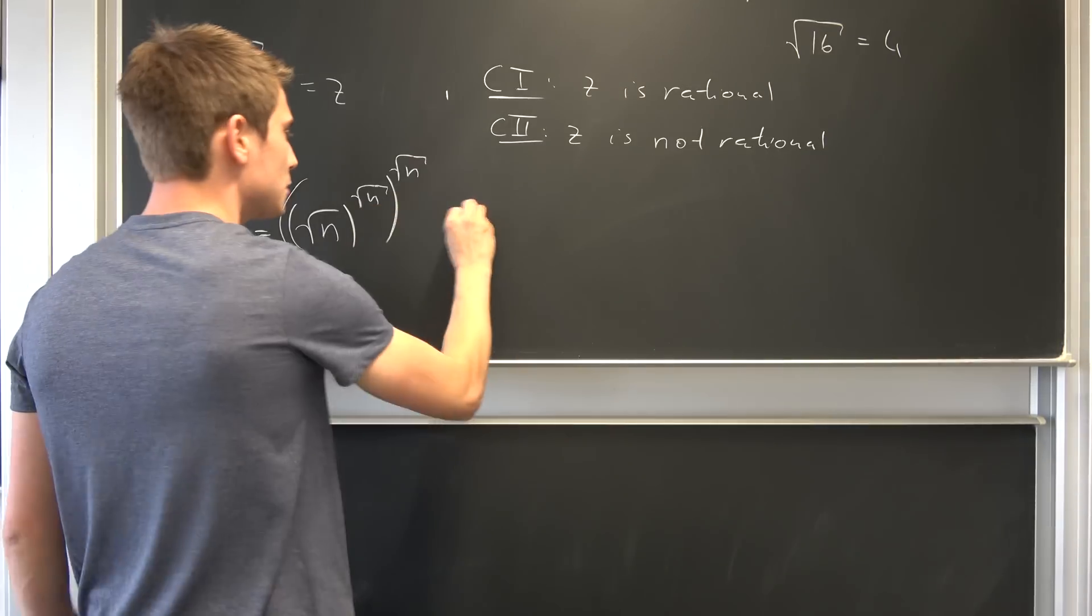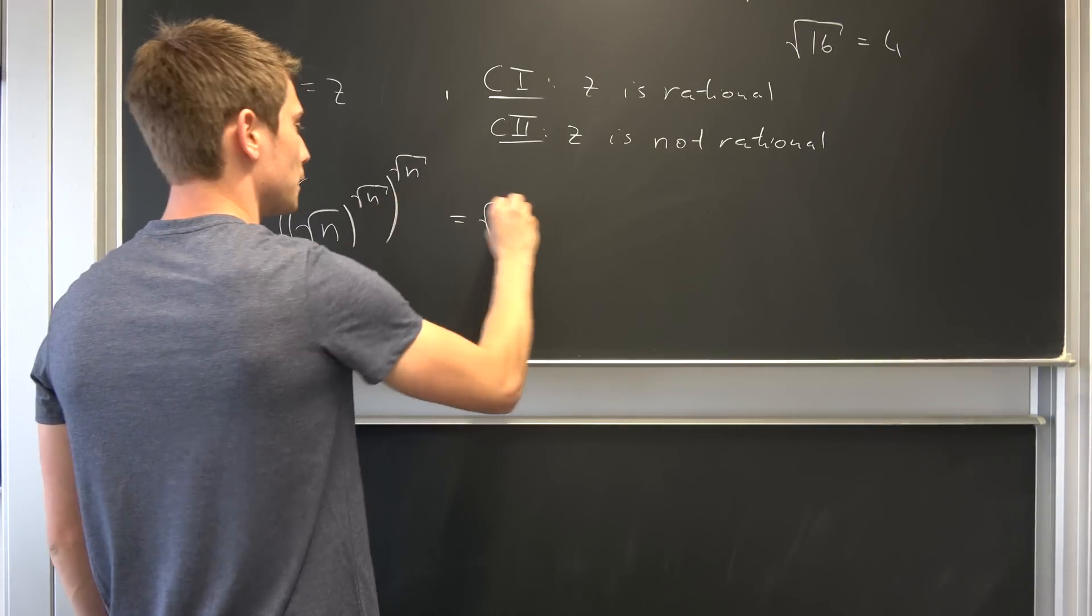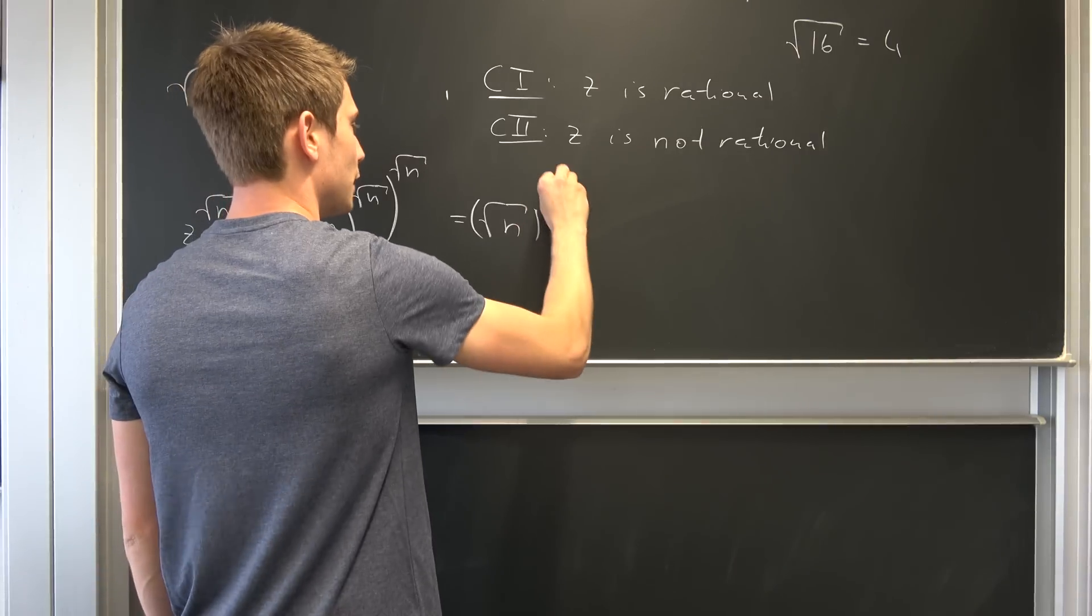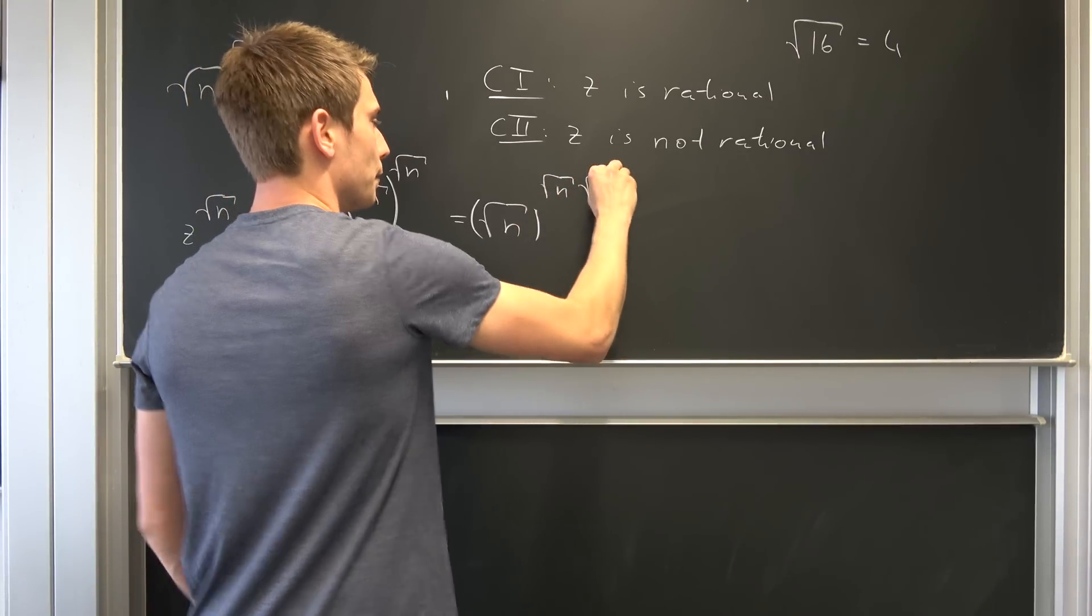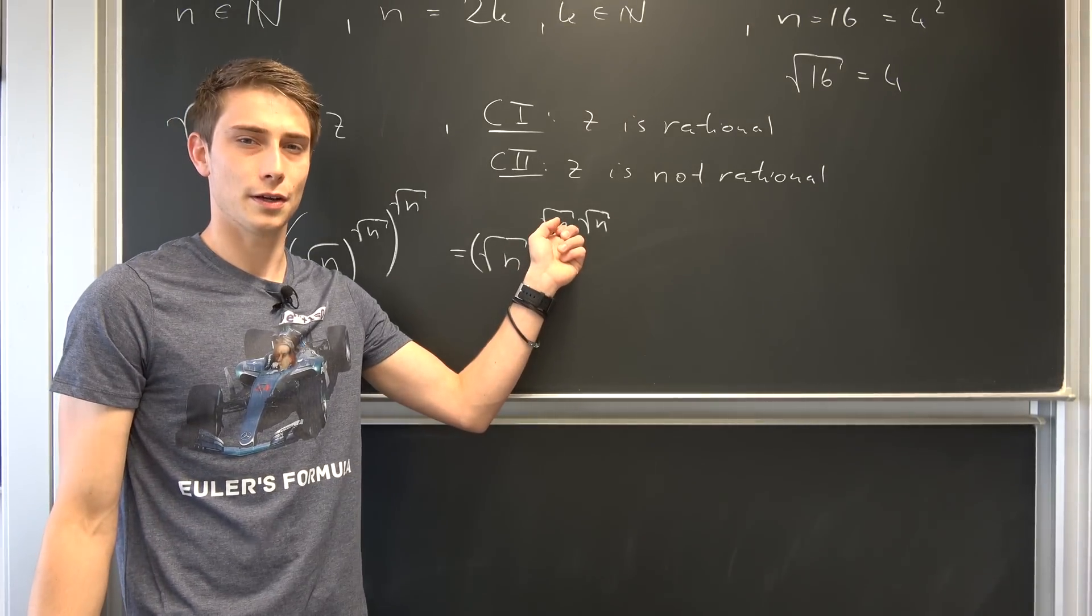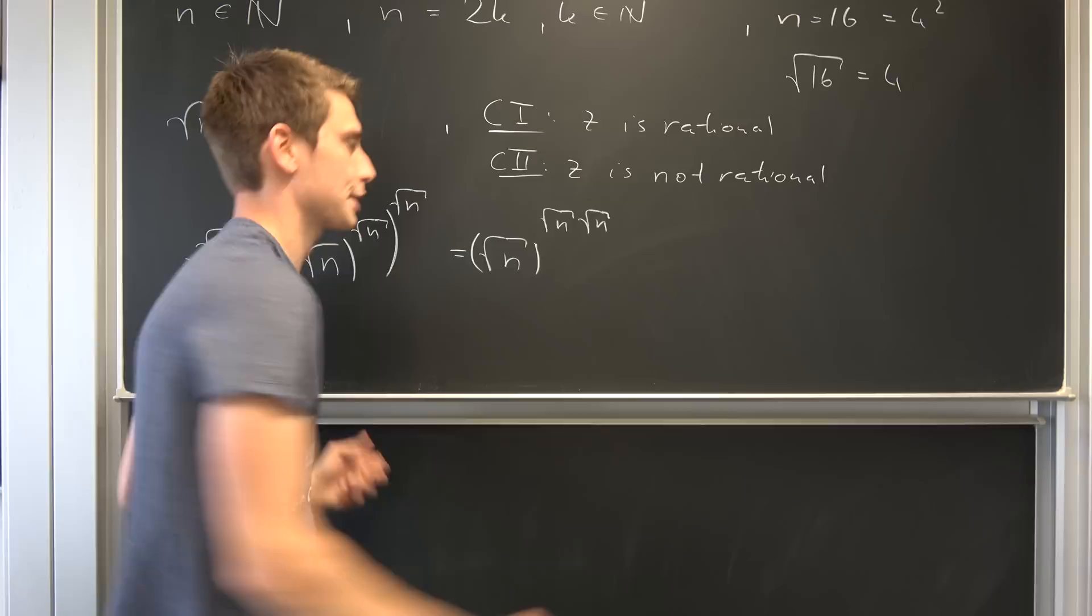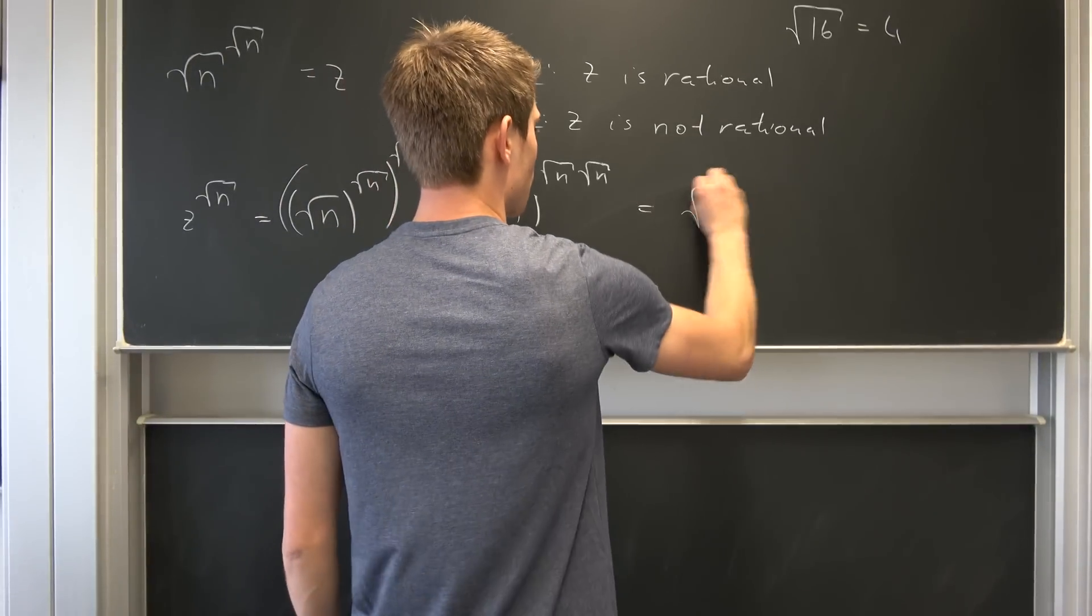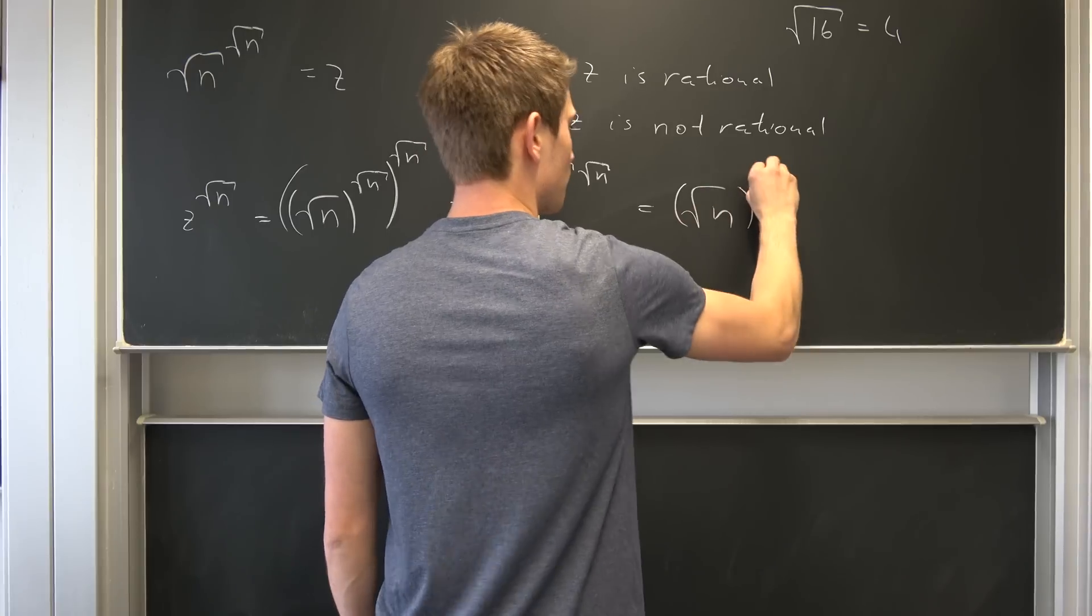Well, we can use the power properties to turn this into square root of n to the power of square root of n times square root of n. Well, this is just n. So we have the square root of n to the nth power.